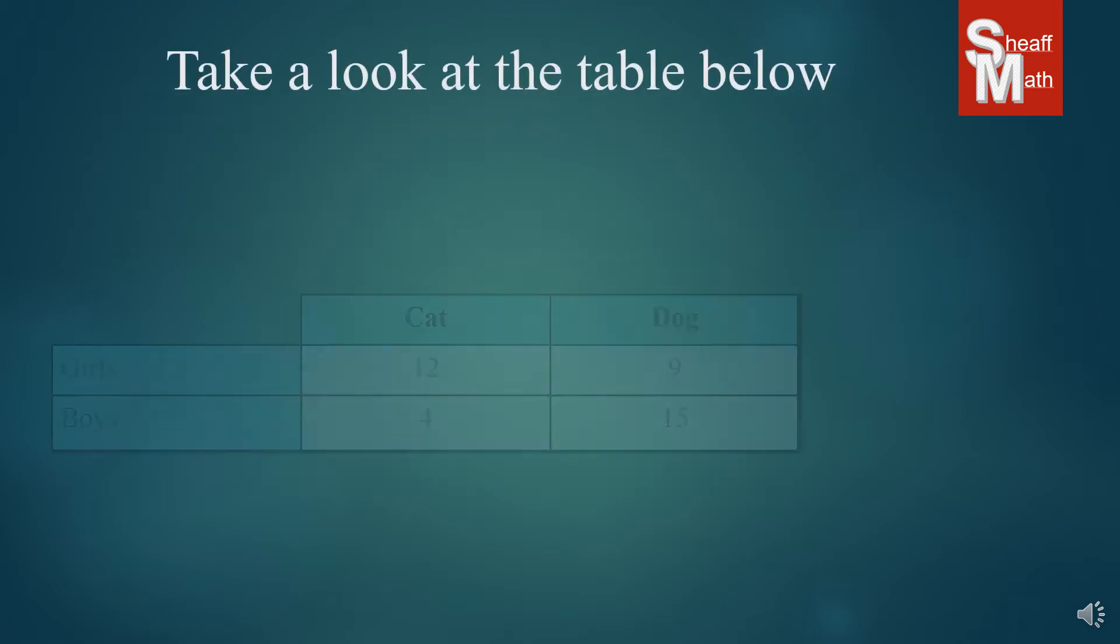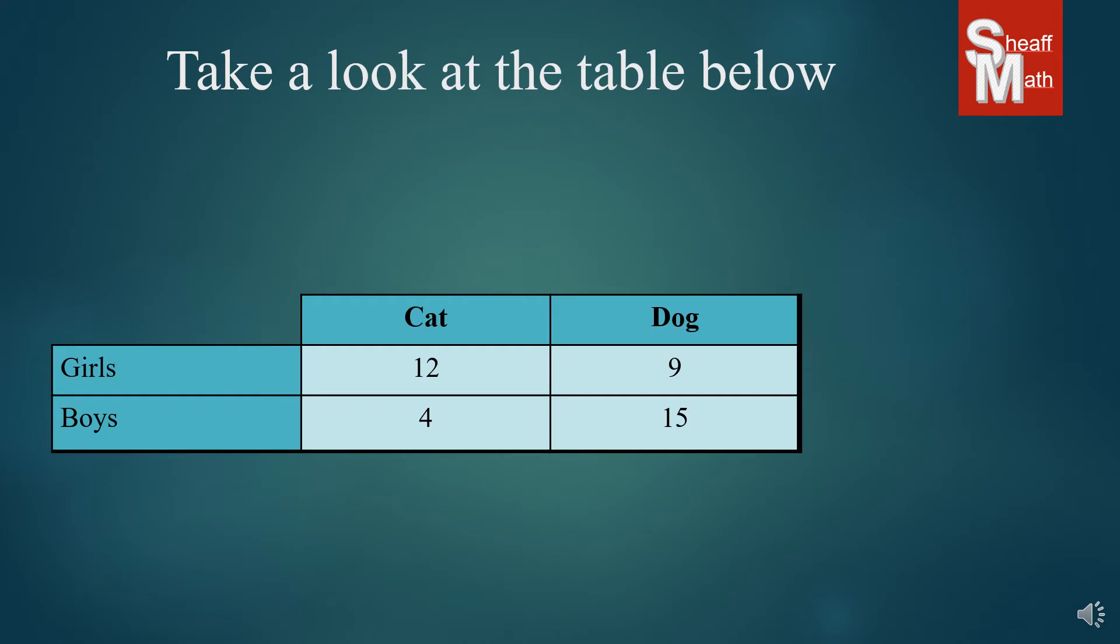Now let's take a look at the table below. This is a typical two-way frequency table. Anytime you get one of these you have to study it to see what exactly they're talking about. This particular one shows a survey done amongst some kids to see which pet was most preferred, a cat or a dog, divided into girls and boys. You can see the number 12 represents, out of all those surveyed, 12 of them were girls who preferred cats.